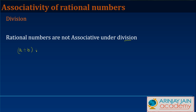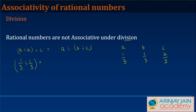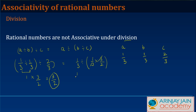What about division? We need to check whether (a ÷ b) ÷ c equals a ÷ (b ÷ c). Let a = 1/3, b = 1/3, c = 2/3. Left side: (1/3 ÷ 1/3) ÷ 2/3 = 1 ÷ 2/3 = 3/2. Right side: 1/3 ÷ (1/3 ÷ 2/3) = 1/3 ÷ (1/3 × 3/2) = 1/3 ÷ 1/2 = 1/3 × 2/1 = 2/3. Since 3/2 ≠ 2/3, rational numbers are not associative under division.